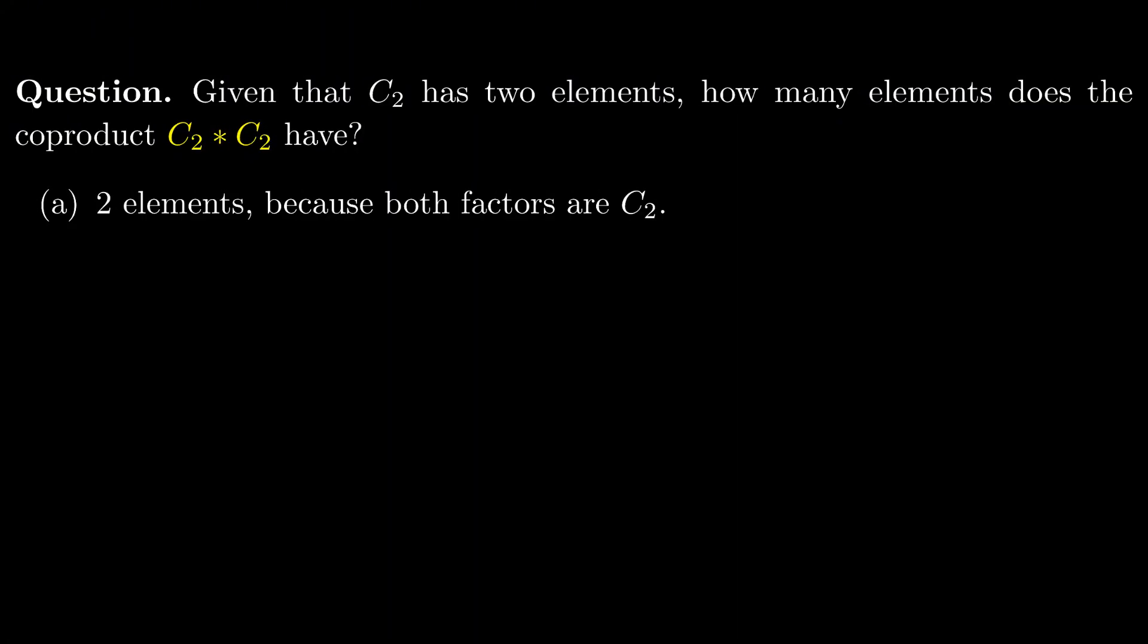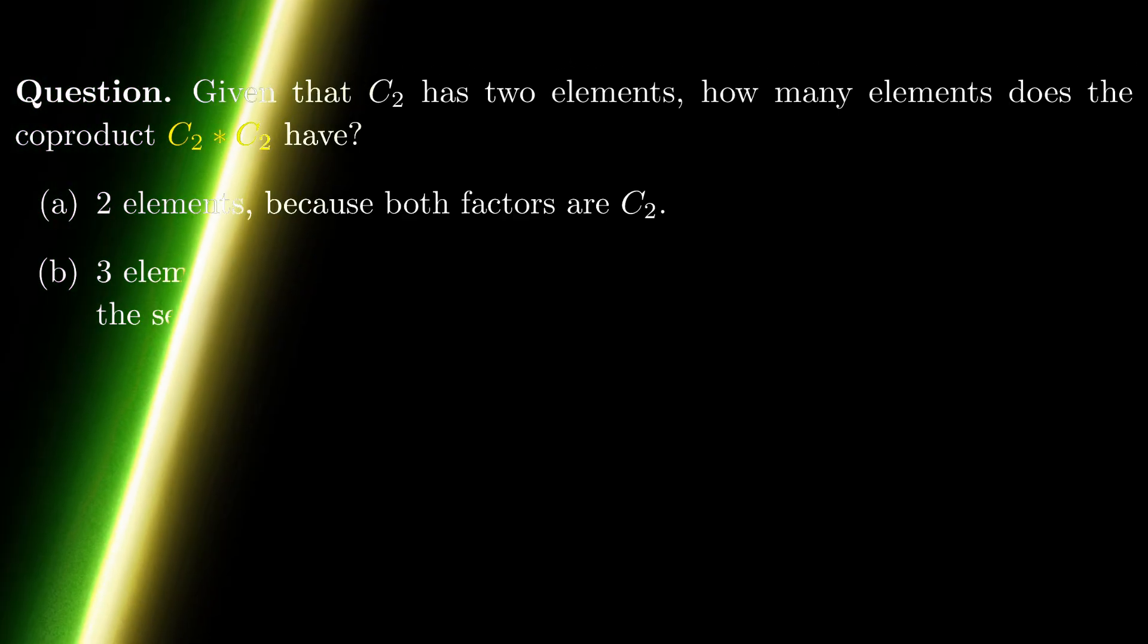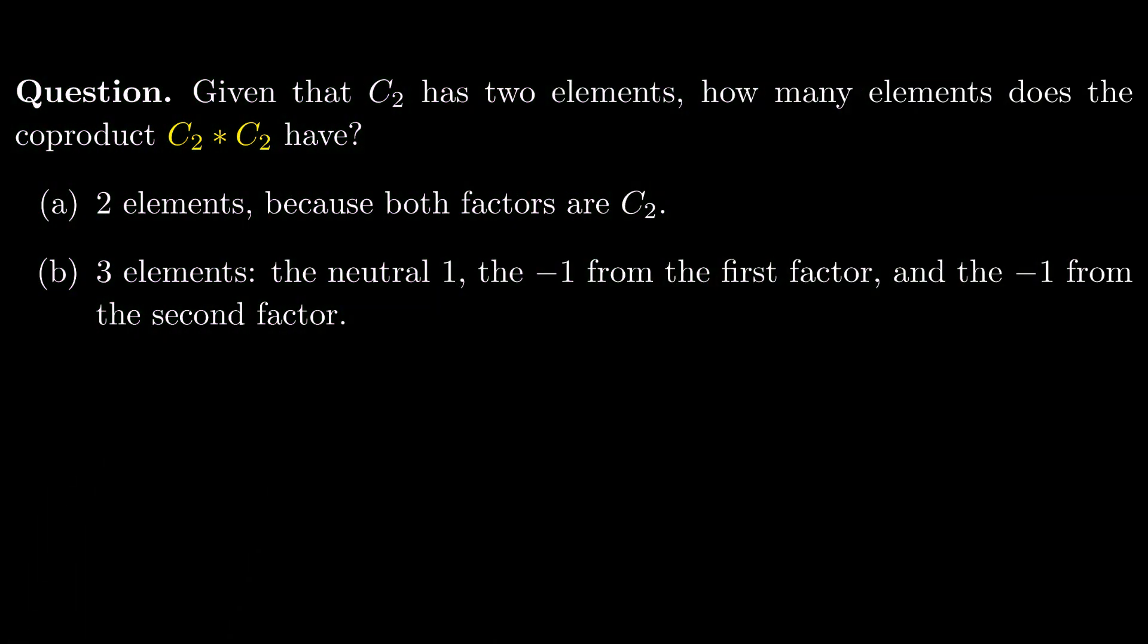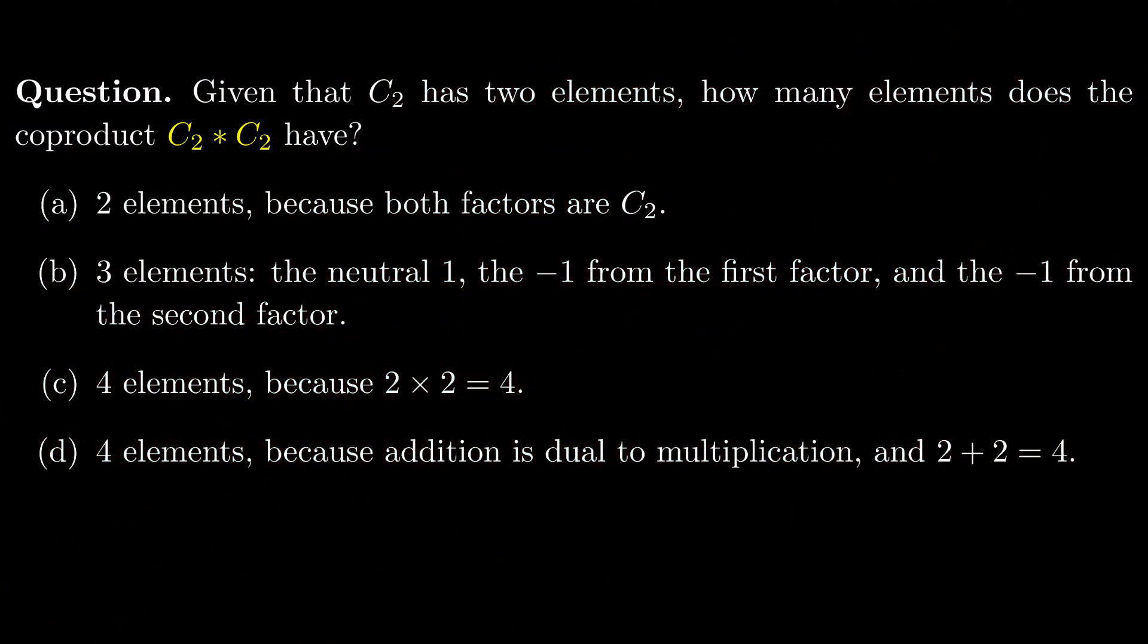Given that C2 has two elements, how many elements does the coproduct of C2 with itself have? Is it A, two elements, because both factors are C2? Or B, three elements, the neutral one, the minus one from the first factor, and the minus one from the second factor? Is it C, four elements, because 2 times 2 equals 4? Or is it D, four elements, because addition is dual to multiplication, and 2 plus 2 is 4? Or is it E, infinitely many elements, because... well, just because?